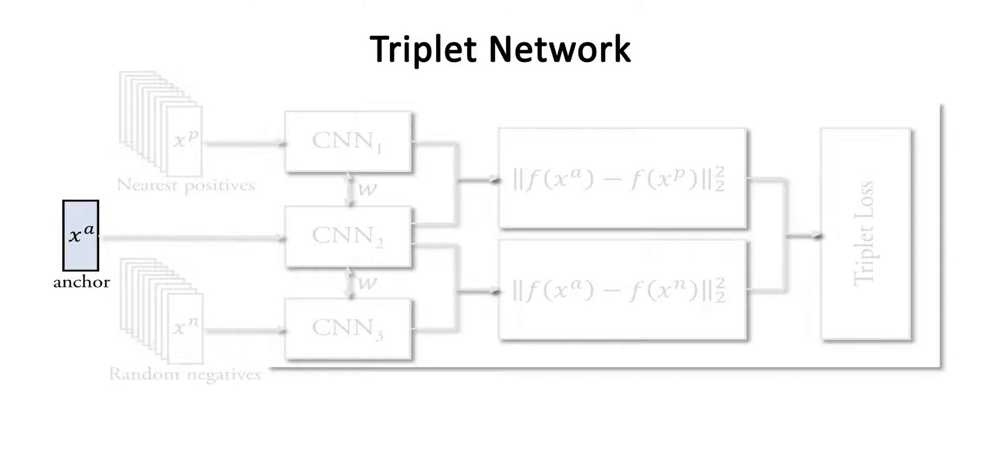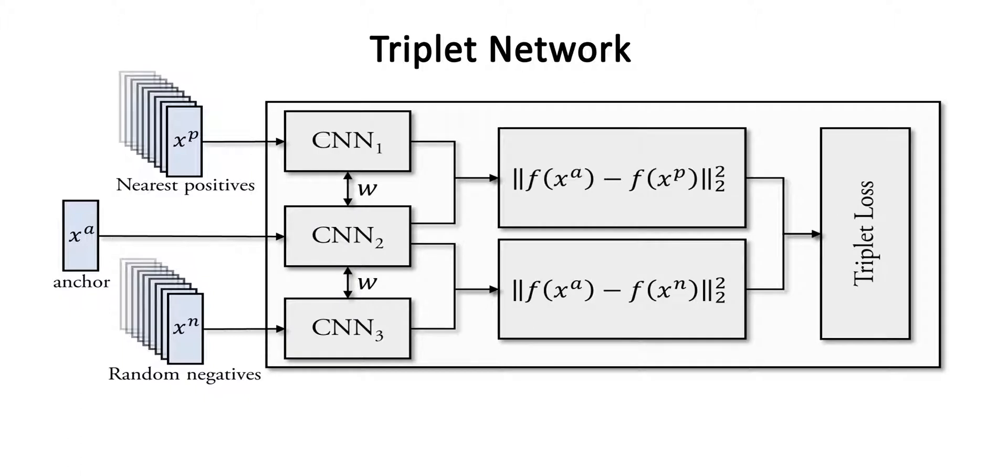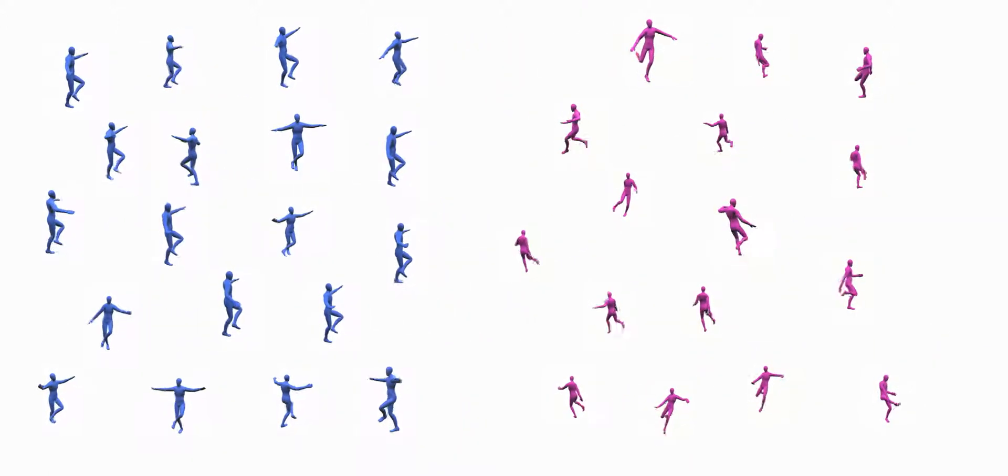The feature space is defined using a deep neural network. The network learns good features to represent the motion words and generates an embedding space by training using a triplet loss function. The embedding process places semantically similar motion words close together in feature space and semantically different words far apart.